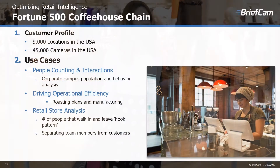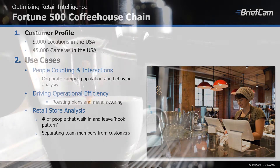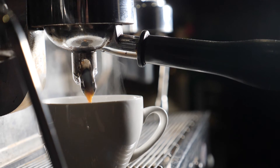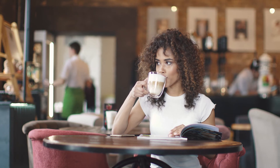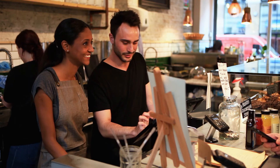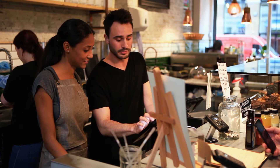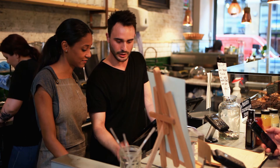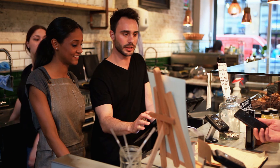A bit of an out-of-the-box scenario — it doesn't have to be a store. In this case, a restaurant: a Fortune 500 coffeehouse chain with 9,000 locations across the U.S. and 45,000 cameras installed. We're using a people counting analytic to understand occupancy from a corporate campus perspective, as well as queue management — how we want to staff our stores appropriately. Deriving operational efficiency using people counting, understanding how many patrons are in the store, we can then derive appropriate roasting plans and manufacturing to have the right number of products on hand.